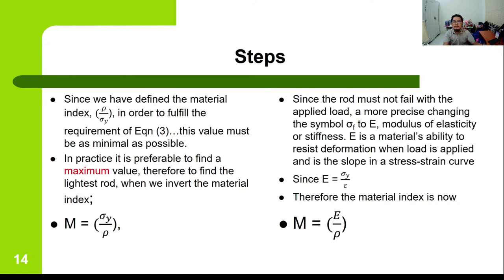Since the material index is ρ/σ_Y, to minimize mass this value must be as small as possible. In practice it is preferable to find the maximum value, so we invert the material index to yield strength over density (σ_Y/ρ). Since the rod must not fail under the applied load, we can more precisely use the modulus of elasticity E — which is the material's ability to resist deformation when a load is applied and is the slope of the stress-strain curve. Since E = yield stress / strain, the material index becomes M = E/ρ, which we substitute into the previous equation.